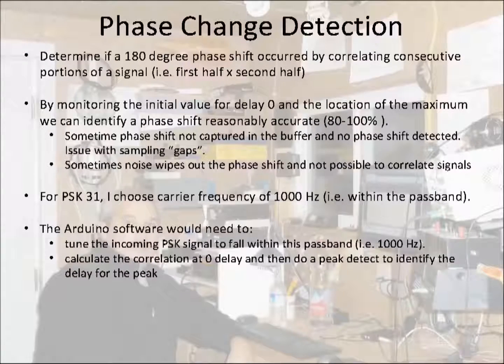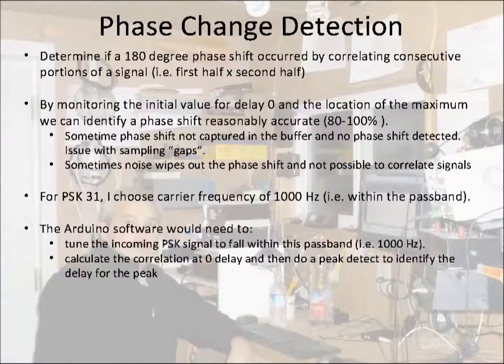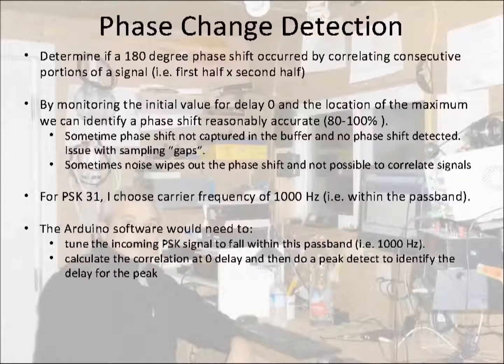In summary, here's how I decode PSK. First of all, I choose a PSK carrier of 1000 Hz, which is the same as a RTTY mark frequency. It keeps things simpler. The Arduino receiver would need to tune the PSK carrier into the passband. I would then do an autocorrelation of the first two halves of the signal sample buffer. I would monitor the value at delay zero as well as the location of the maximum to identify 180 degree phase shift. Every 32 milliseconds, I would check for a one or zero and then frame the received PSK character.